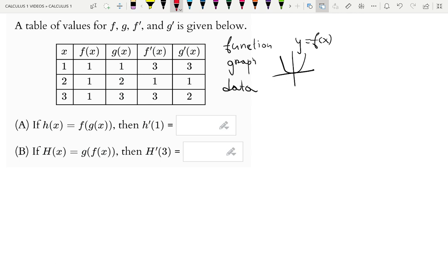So x here are inputs. Inputs are in the first column 1 to 3. Outputs are in the first row. They are outputs of f and g, f prime, g prime. So original function outputs and their derivatives outputs. And now let's learn how to use this table.